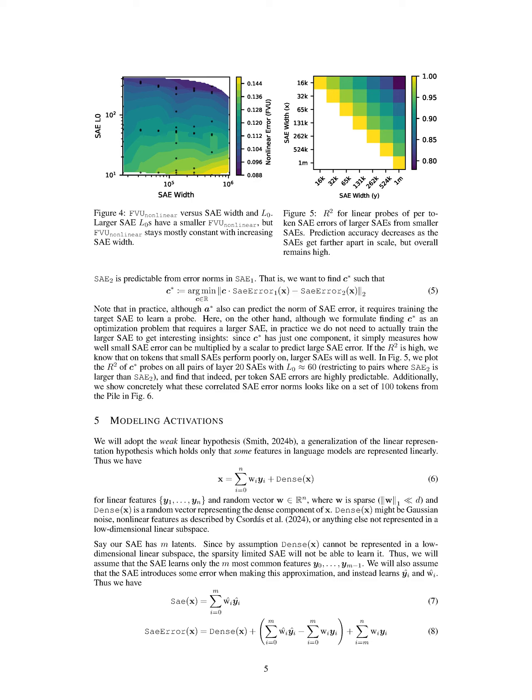Section Summary. In this section, we analyze the performance of sparse autoencoders in reconstructing neural network activations, finding that optimal linear probes can explain a significant portion of the variance in SAE error norms (86% to 95%) and error vectors (30% to 72%). We also observe that while larger SAEs show less predictable error vectors, the unexplained variance remains constant at fixed sparsity, indicating a complex relationship between SAE width, sparsity, and error predictability.